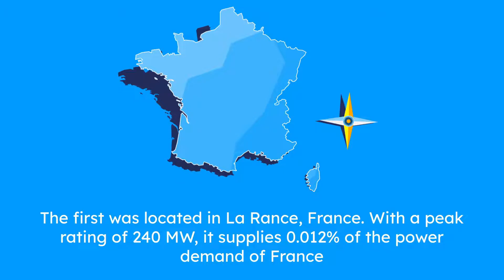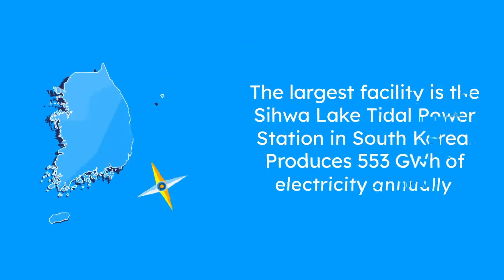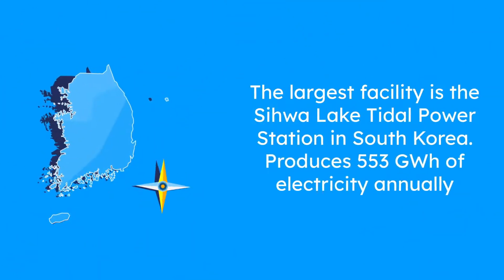The first commercial tidal plant was located in Rance, with a peak rating of 240 megawatts. The largest facility is the Sihwa Lake Tidal Power Station in South Korea, which produces 553 gigawatt-hours of electricity annually, supporting a city of 500,000.